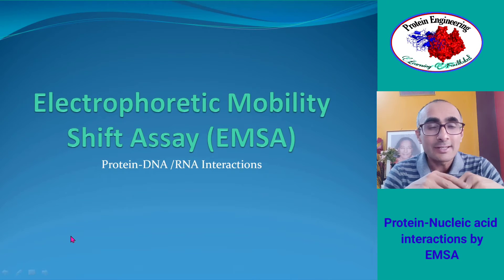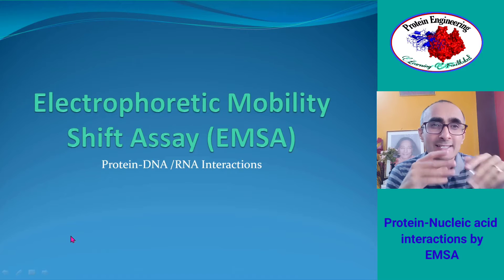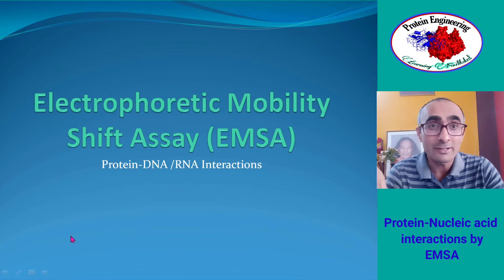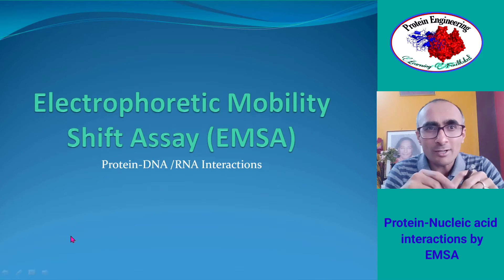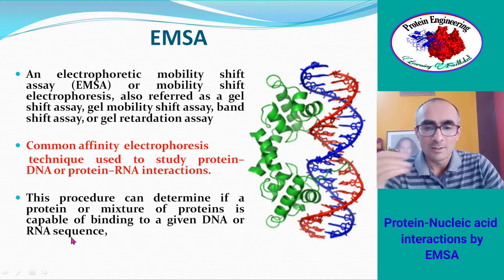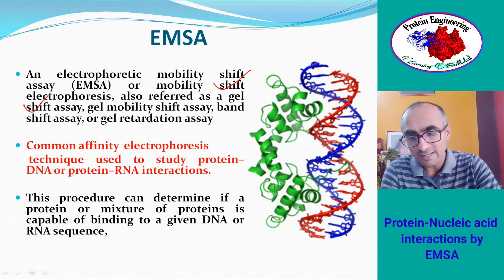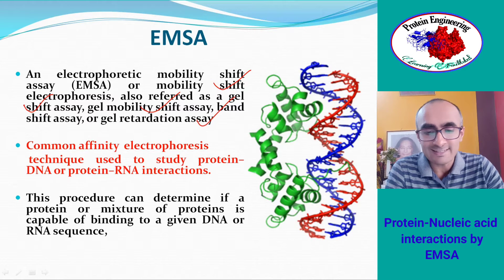Hello everyone. In today's lecture we will talk about electrophoretic mobility shift assay, that's EMSA. EMSA is a very common technique used to find out protein-DNA or protein-RNA interactions — for example, if you have a promoter region of a gene and you want to see which transcription factors bind to it. EMSA is also known as mobility shift assay, gel shift assay, gel mobility shift assay, band shift assay, or gel retardation assay.